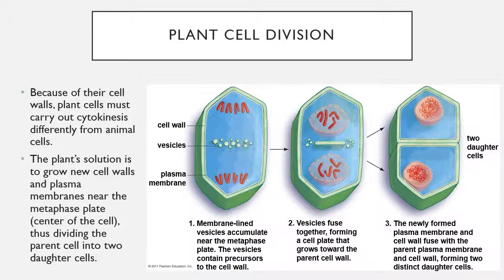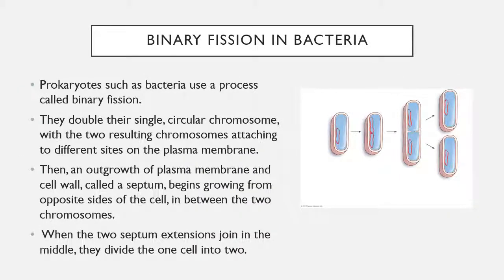In bacteria, they use a process called binary fission. Bacteria have a single circular chromosome — a single circular piece of DNA. First they make a copy of the only chromosome they have. Then the plasma membrane and cell wall start to grow inward and form what's called a septum — a divider in the middle of the two cells. The septum eventually goes all the way across and the bacterial cells split apart into two new daughter cells.